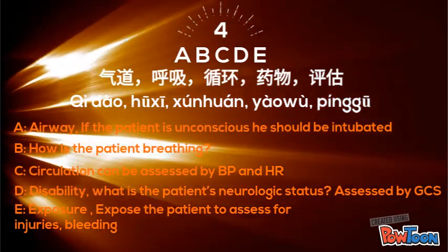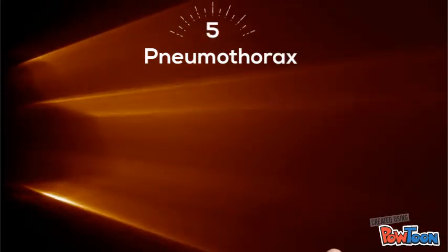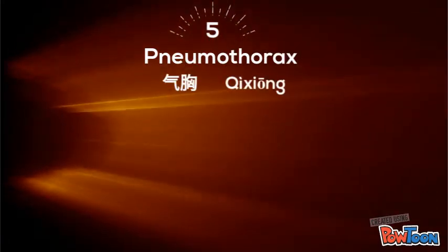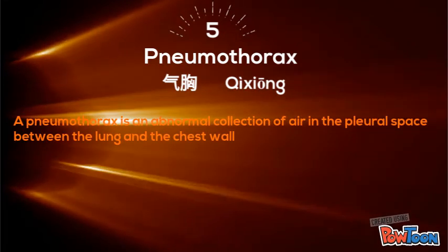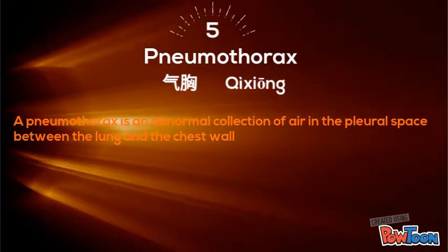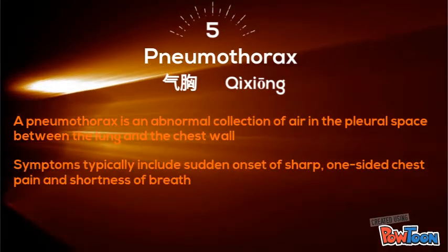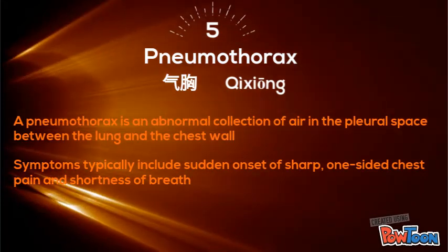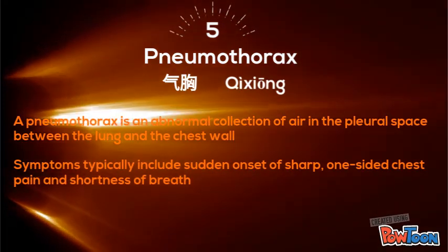The last word is pneumothorax — qi xiong. A pneumothorax is an abnormal collection of air in the pleural space between the lung and the chest wall. Symptoms typically include sudden onset of shock, one-sided chest pain, and shortness of breath.